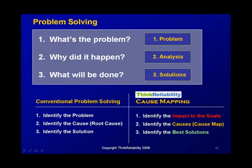In a root cause analysis, it's not just identifying the problem as a singular thing — it's identifying the impact to the goals. There might be two or three impacts to the goals. You could have a safety incident, a service issue, and a labor issue all in one incident. There isn't just a single problem — it's always defined by goals, and there are multiple causes. Then the solution step is where you identify the best solutions to mitigate the risk.